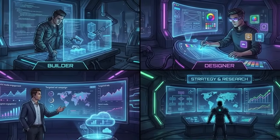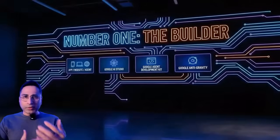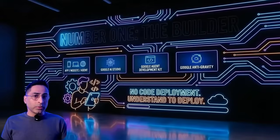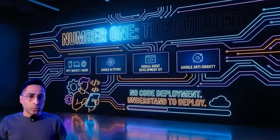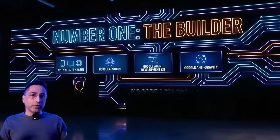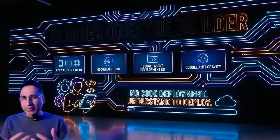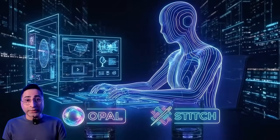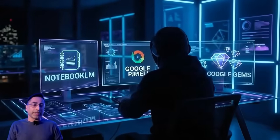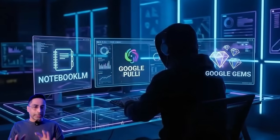Here are the different personas and apps I'm going to cover. Number one is the builder — someone who is basically building an app, a website, or an agent. For this, I'm going to cover Google AI Studio and Google Agent Development Kit, and also touch upon Google Antigravity. Number two is the creator persona — someone who designs the UX or wants to tell a story visually. The tools here will be Google Stitch and Google Opal. The third is business and marketing, so if you're a business owner or a marketer, I'm going to cover Notebook LM and Google Pomeli.